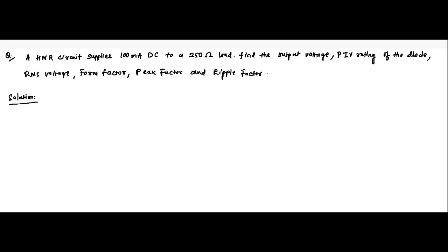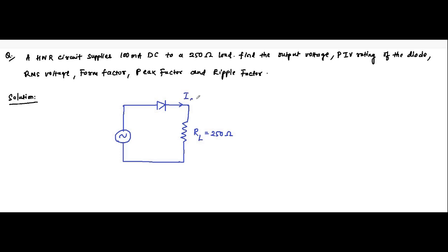First, let us draw the circuit diagram. Here we have the supply. Nothing has been mentioned about the diode, so we will assume that the diode is ideal and the forward resistance is zero. This is the diode and we have the load resistance RL equal to 250 ohm. IDC is equal to 100 milliampere. These are the two data which are given. This is the supply voltage; nothing has been given about any data related to it.